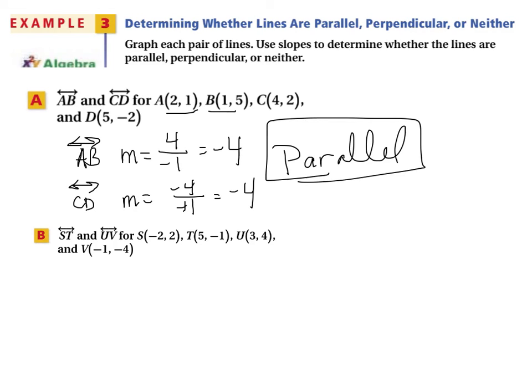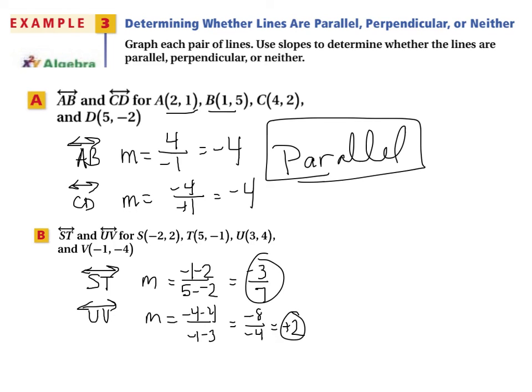The next set of lines, ST and line UV. So let's see if we figure this out. Line ST, if we subtract our y values, negative 1 minus 2, subtract our x values, 5 minus negative 2. That gives me a slope of negative 3 sevenths. UV. If we subtracted the y's, negative 4 minus 4, subtracted the x's, negative 1 minus 3. That gives me negative 8 divided by negative 4, which gives me a slope of positive 2. So the slopes here, they're not the same. They're not opposite reciprocals. Therefore, neither.